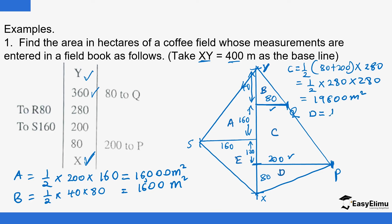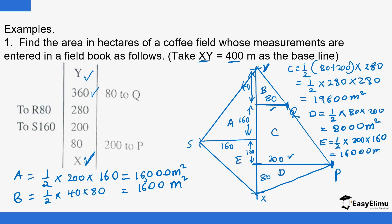Area D is also a triangle: half times a base of 80 and a height of 200, giving 8,000 square meters. Area E is also triangular: half times a base of 80 plus 120, which is 200, multiplied by a height of 160, giving 16,000 square meters.